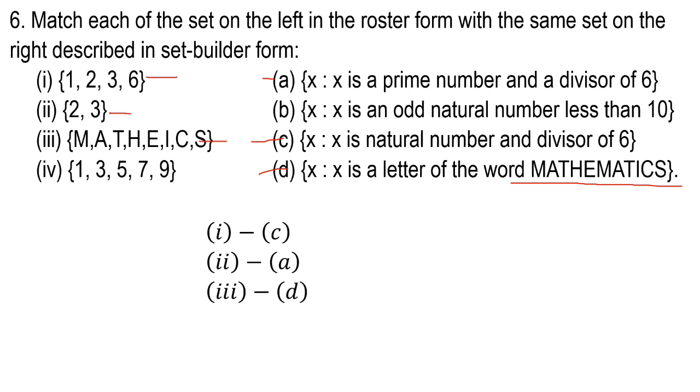Moreover, {1, 3, 5, 7, 9} automatically matches option B. 1, 3, 5, 7, 9 are odd natural numbers less than 10.